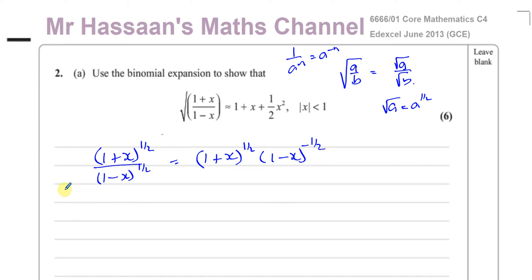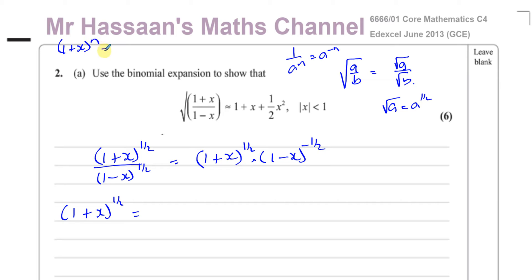I'm going to take each of these on their own and expand up to the term in x squared for both, then multiply them together up to those terms. The binomial expansion formula, which is in the formula book, is: (1 plus x) to the power of n equals 1 plus nx plus n(n minus 1) over 2 factorial times x squared, plus n(n minus 1)(n minus 2) over 3 factorial times x cubed, and so on.